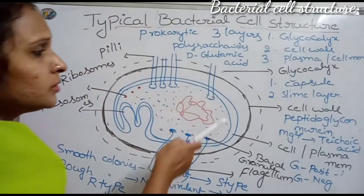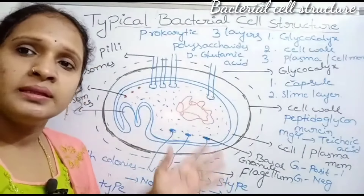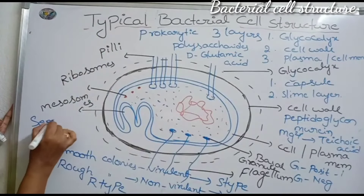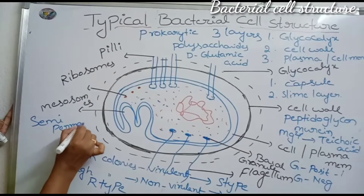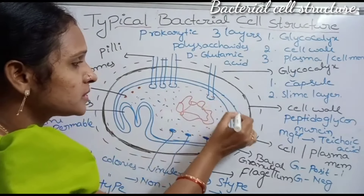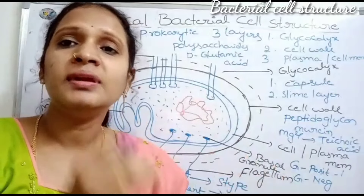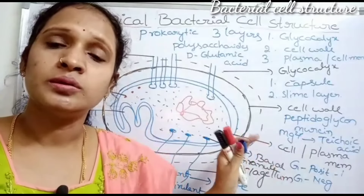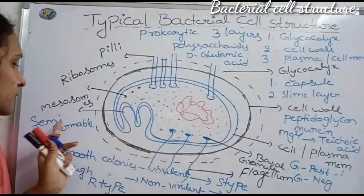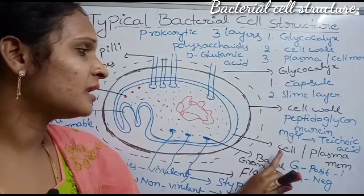The innermost layer is the plasma membrane, also called the cell membrane. This plasma membrane acts as a semi-permeable membrane. It has small pores on its surface, which allow only particular liquid-like structures through the membrane. That is why it is called a selectively semi-permeable membrane.